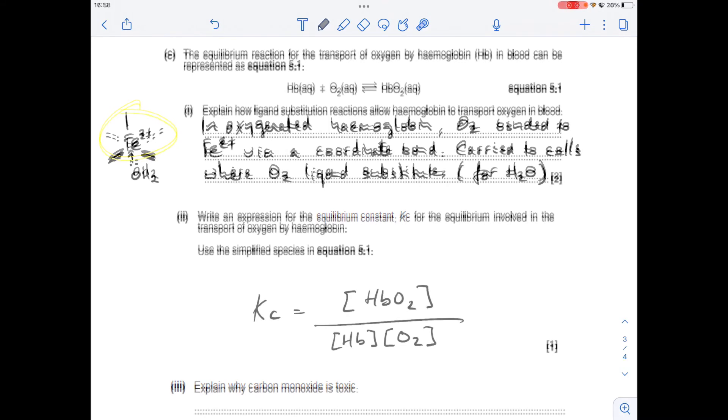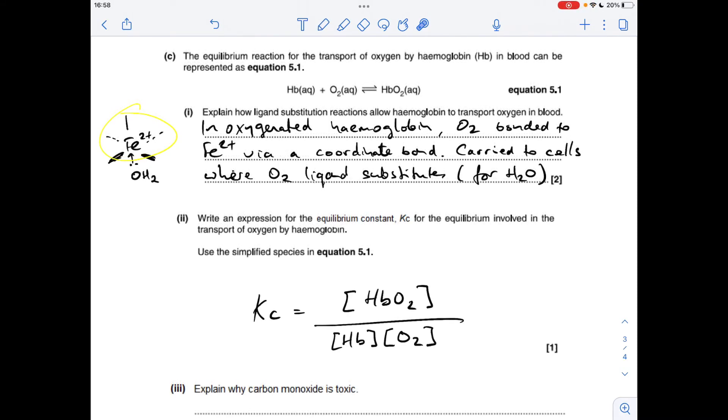This part: write the equilibrium constant expression for this equilibrium. It's the concentrations at equilibrium of the product over the reactants equilibrium concentration, represented by the square brackets—so it's this over these.